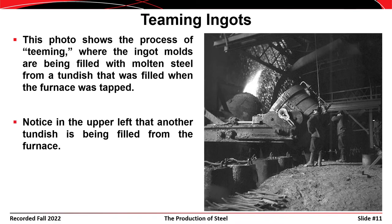This shows the process of teeming ingots — molding the molten steel into ingots. At the bottom of this slide you can see ingots passing below the tundish, which is being tipped up with molten steel about ready to be poured in. These are ingots passing below on a rail line, with the tundish being emptied into them. In the background, another tundish is being charged again with another batch of pig iron, setting up the next heat of steel.